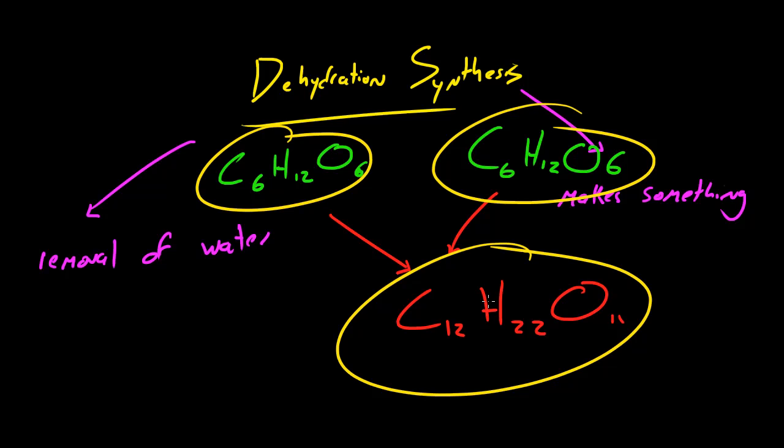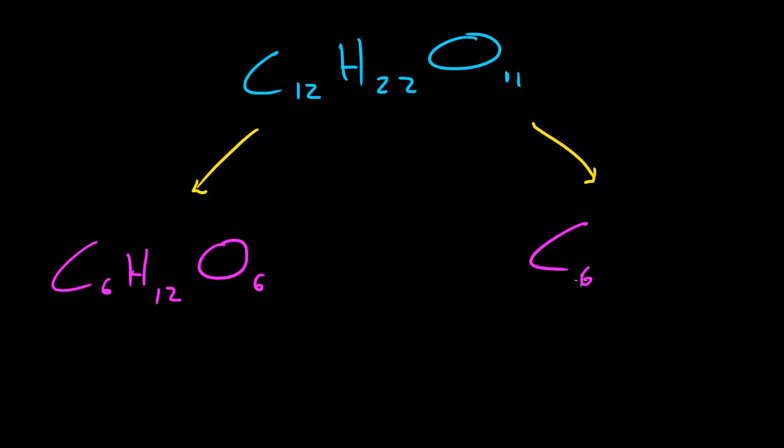So that's why the formula appears a little bit weird, and the opposite of this is hydrolysis. Now hydrolysis would be something like C12H22O11, which remember is our disaccharide called sucrose. Now whenever this would break apart, which is the opposite of dehydration synthesis, this process would be called hydrolysis, and of course this would break apart into C6H12O6, C6H12O6.